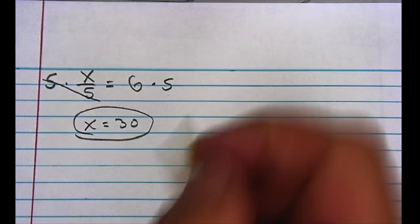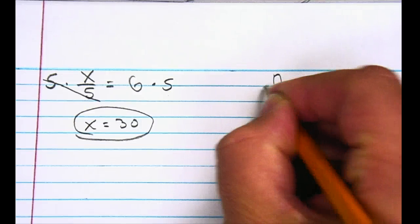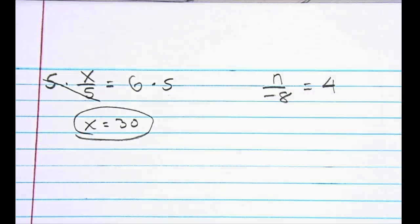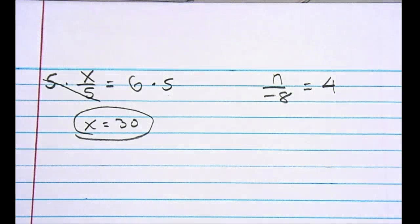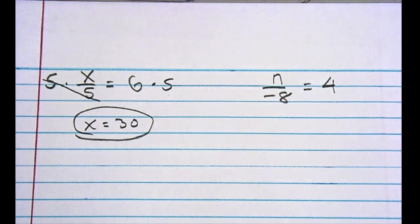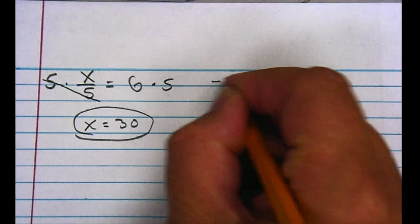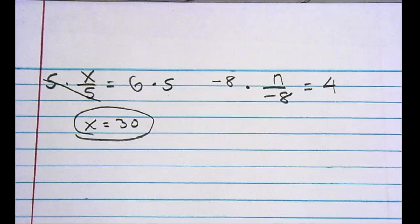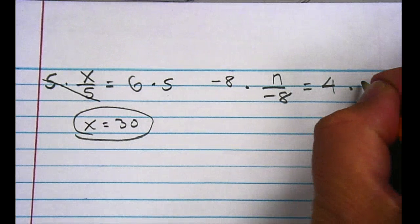Let's say I had n divided by negative 8 is equal to 4. I'm dividing my variable n by negative 8, so to undo that, the inverse of dividing by negative 8 is to multiply by negative 8. But in order to keep the equation balanced, I have to do that to both sides — so I multiply the other side by negative 8 as well.